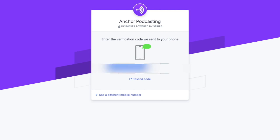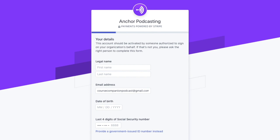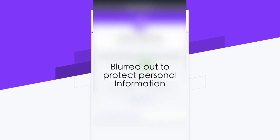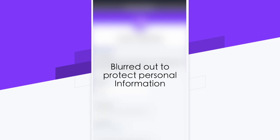Once you verify your account, you'll need to enter more credentials, including your legal name, email, date of birth, the last four of your social, your business name or personal name, as well as your address and your company employer identification number, if you're identifying as a company. Once you've entered all your credentials, click next.